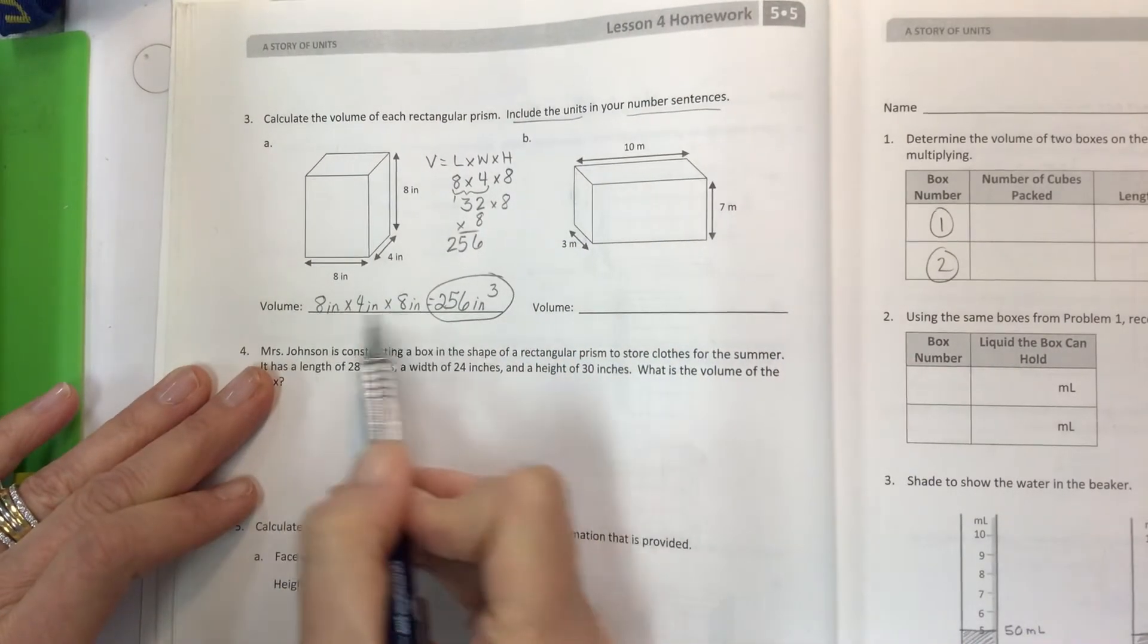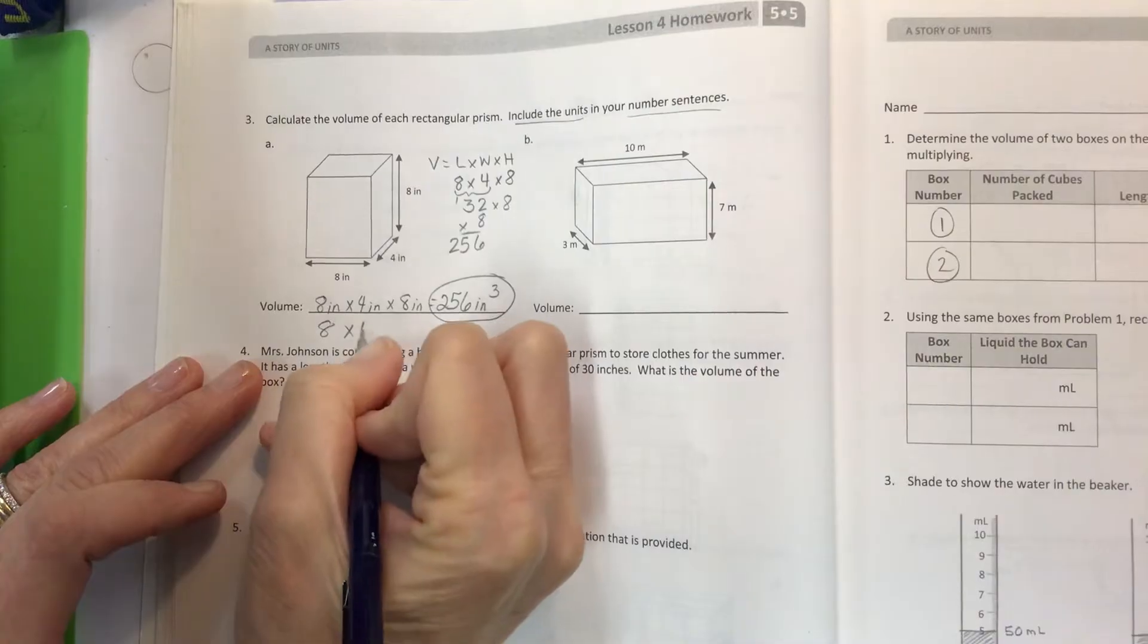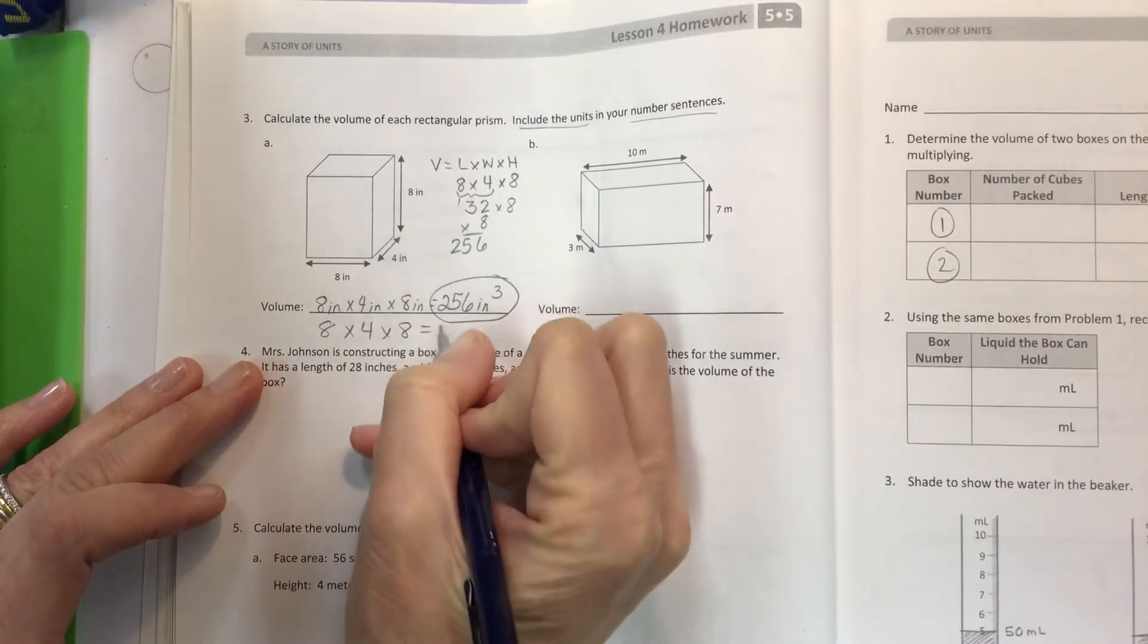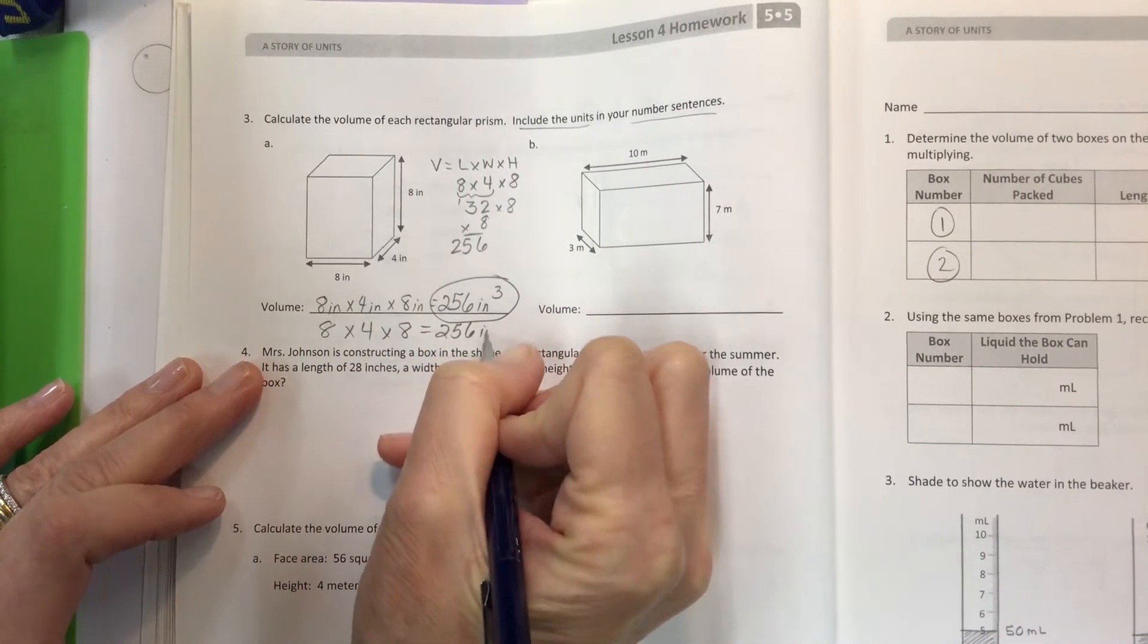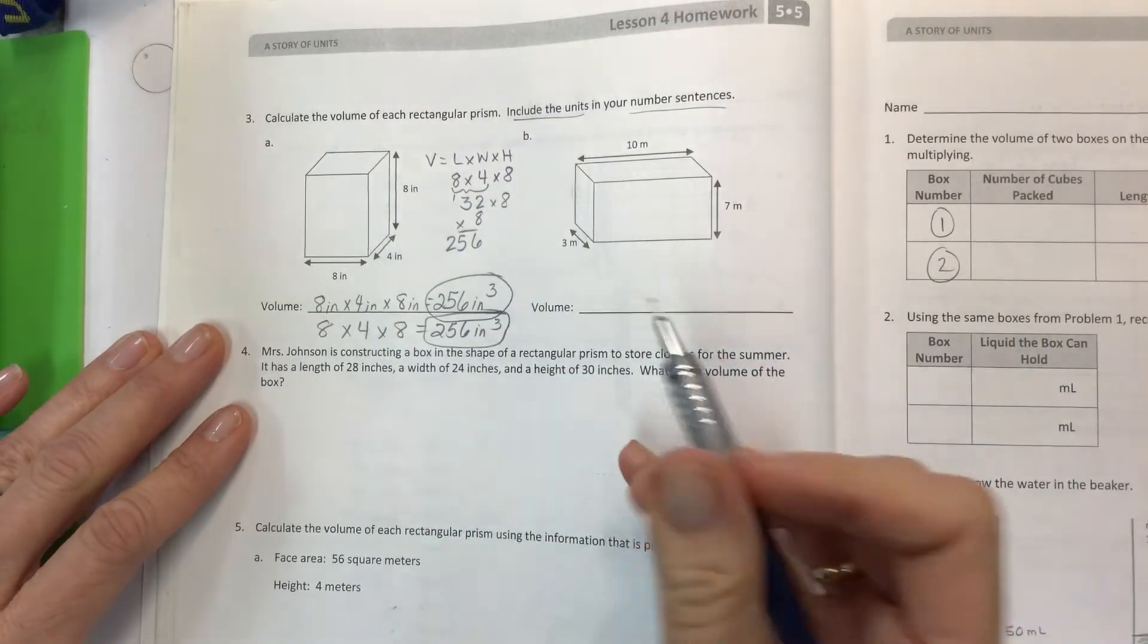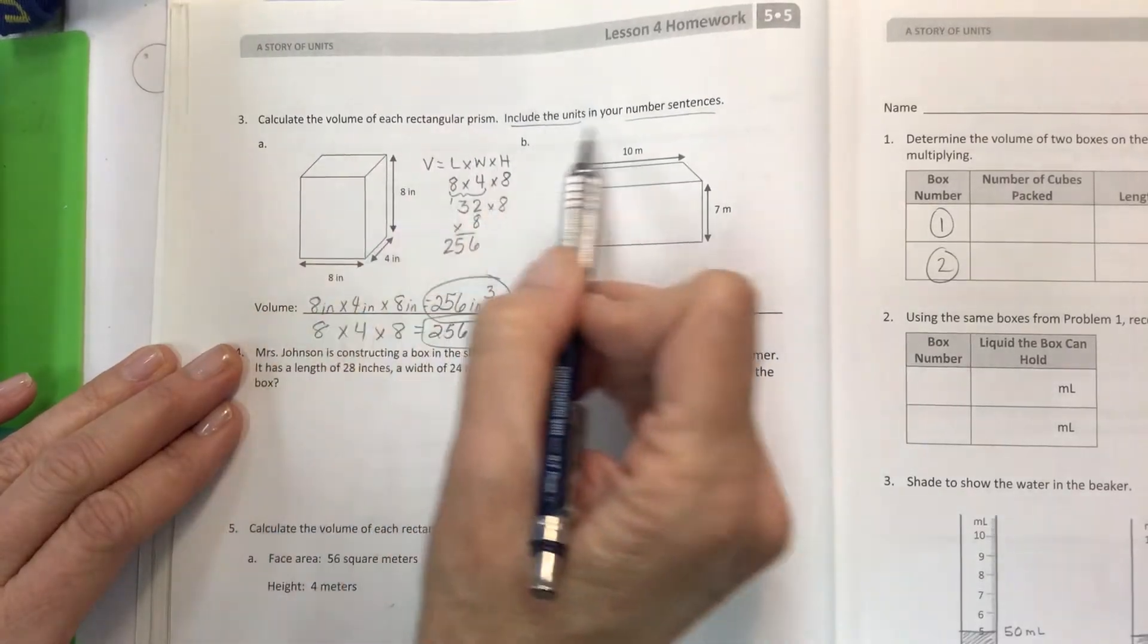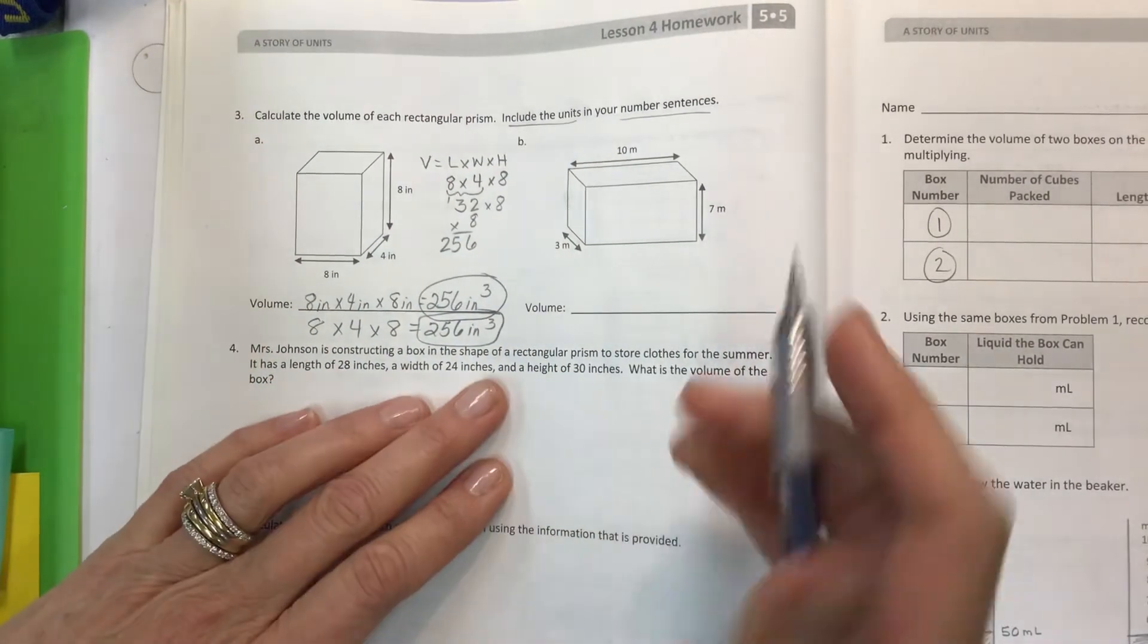That's your answer but they do want you to have all the numbers going across. If you just have 8 times 4 times 8 equals 256 inches cubed, I am fine with that, but if you're a subscriber your teacher might say I want you to have the units. It says right here include the units. So there you go.